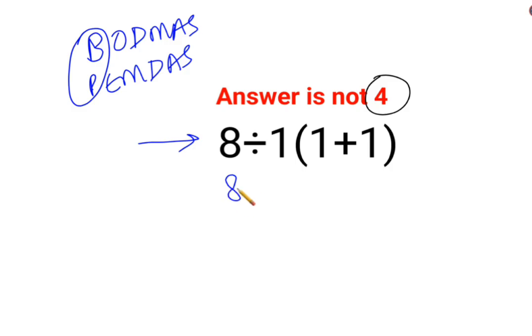So we keep the rest of the question as it is and we'll do the brackets, which is 1 plus 1 which is 2. Now since there is no sign between 1 and the bracket, that means it is getting multiplied.